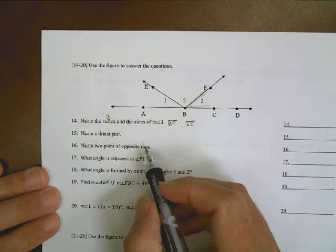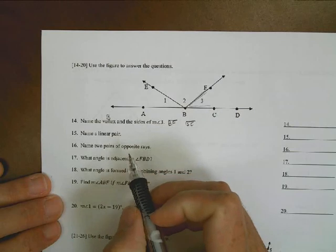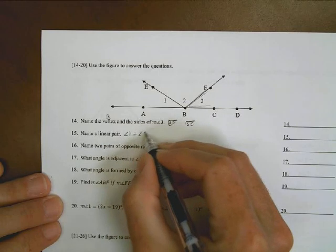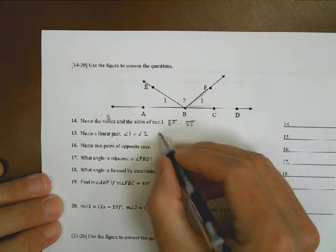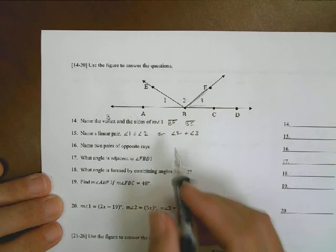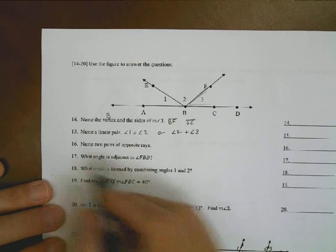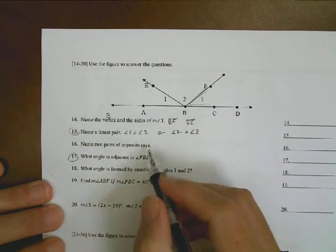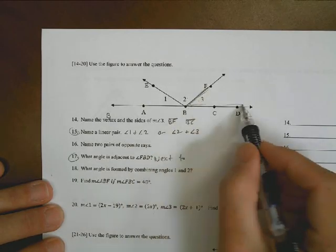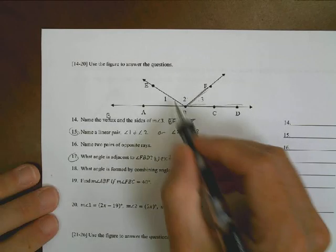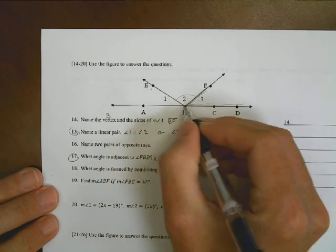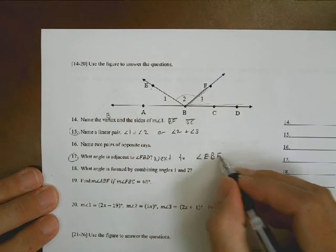So we look here at the next one, number 15. Name a linear pair. Linear pairs are two angles that are side by side. So you could say you have angle 1 and angle 2, or you could also say angle 2 is next to angle 3. For 17, look at just the odd ones here still. What angle is adjacent to FBD? Adjacent means next to. So here's FBD, and so what's next to that is this one here, which we would call angle EBF.